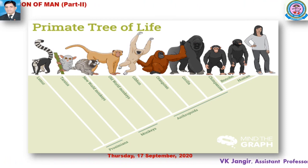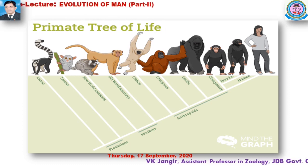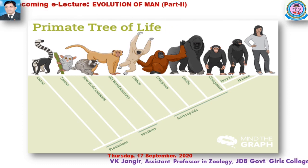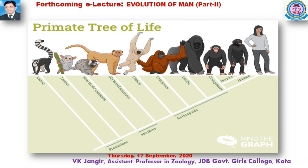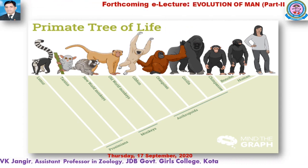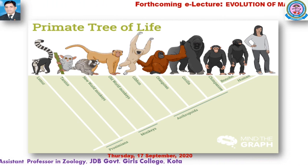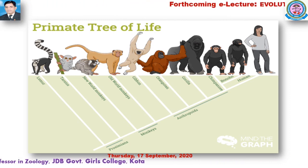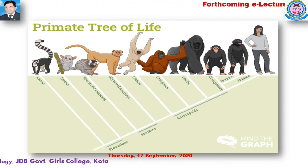The prosimians include two creatures: lemurs and tarsiers. The other group is the simians of primates.